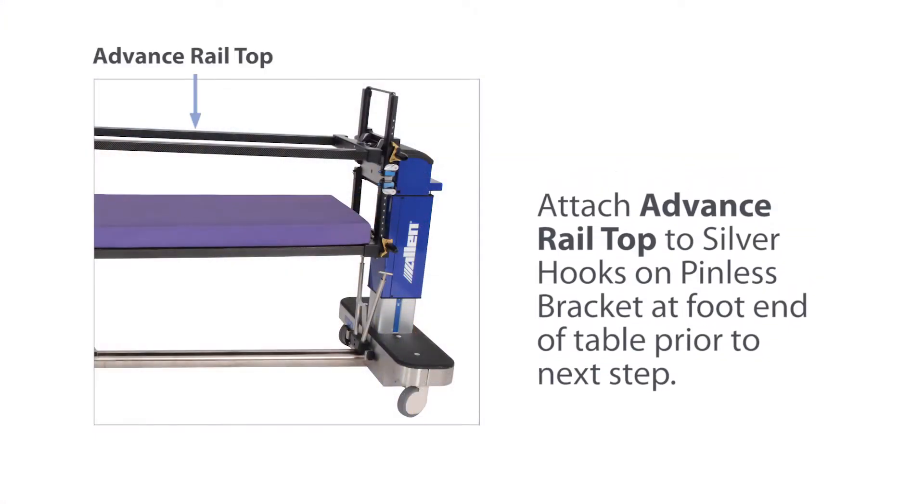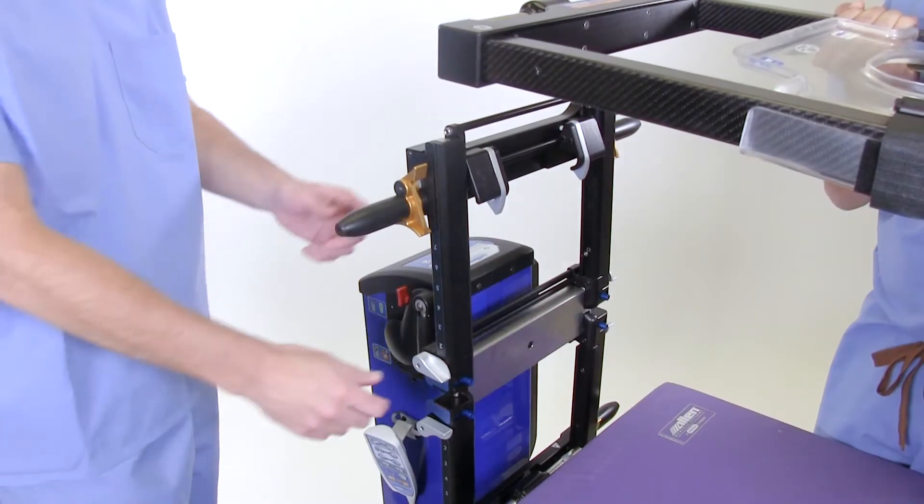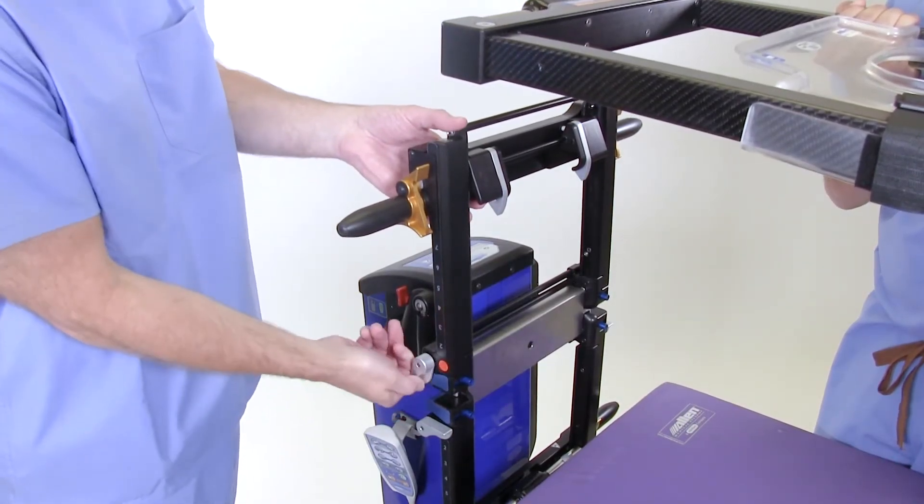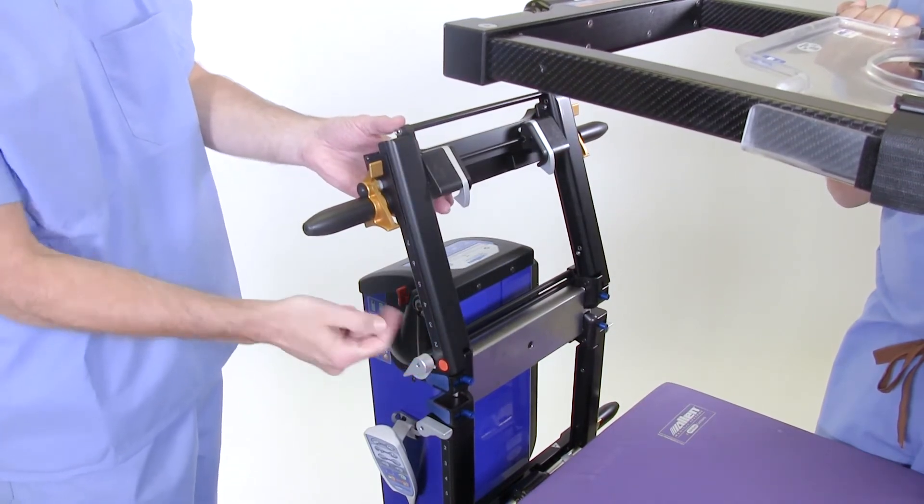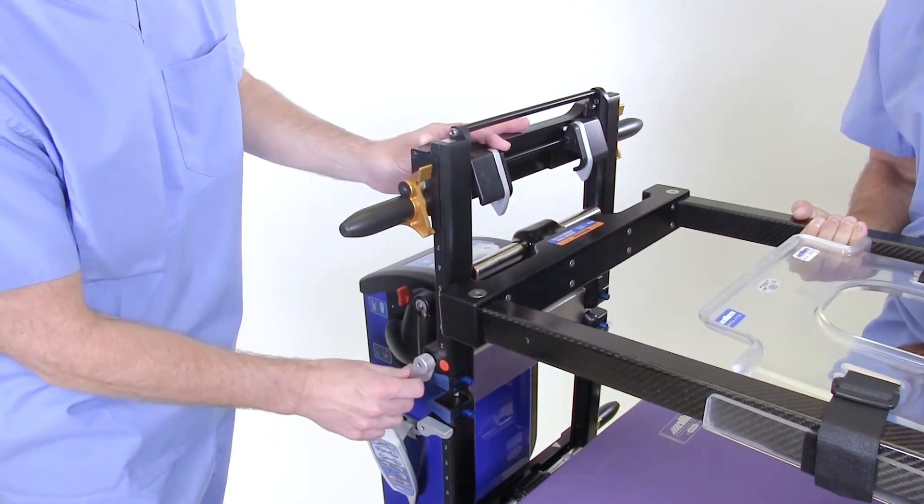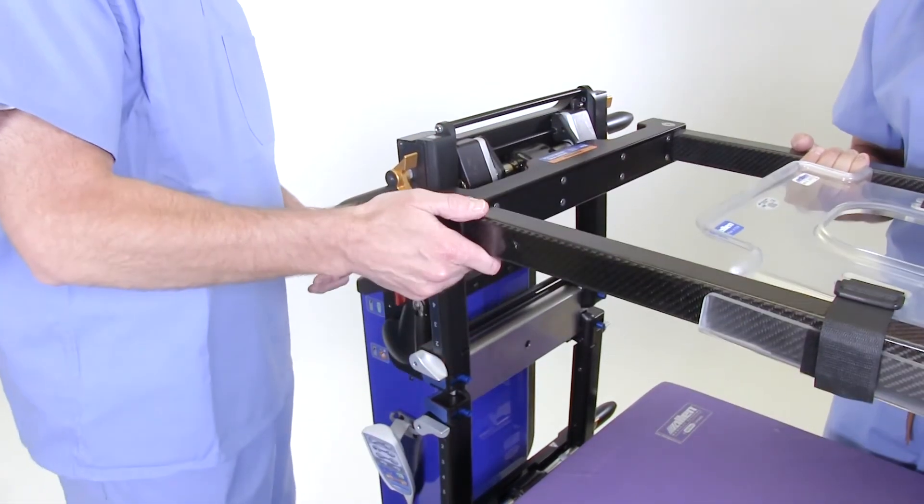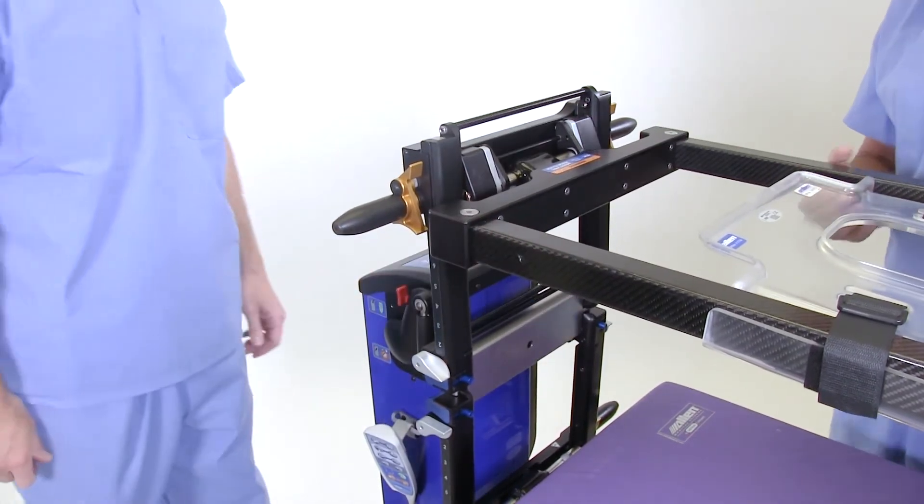Attach the advanced rail top to the silver hooks on the pinless bracket at the foot end of the table prior to the next step. Unlock the silver tilt control latch and tilt the pinless bracket back to allow clearance. To load the rail top, align the bar between the two bracket uprights, tilt the pinless bracket forward and lock the silver tilt control latch. Lift the top into place under the two silver hooks and confirm the rail top is locked in place.